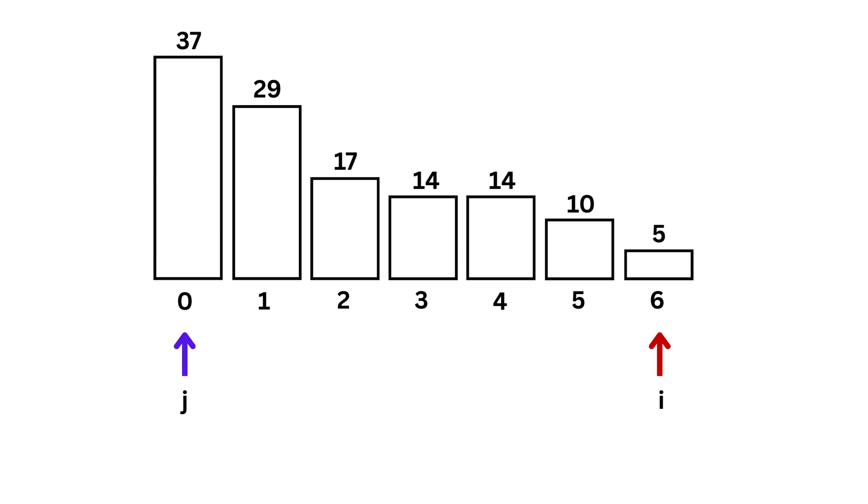In the worst case, like when the list is in reverse order, insertion sort takes n square steps, where n is the number of items, because each new item has to be compared with all the ones before it.